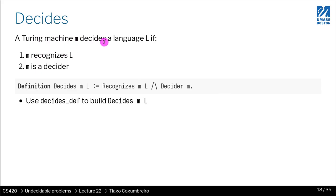And we say that a Turing machine M decides a language if two things happen. The machine recognizes the language and the machine is a decider, which can be defined in Coq very easily with the conjunction. Right? So we say that the machine recognizes L, and M is a decider. We haven't said what is a decider. So let's look at that.